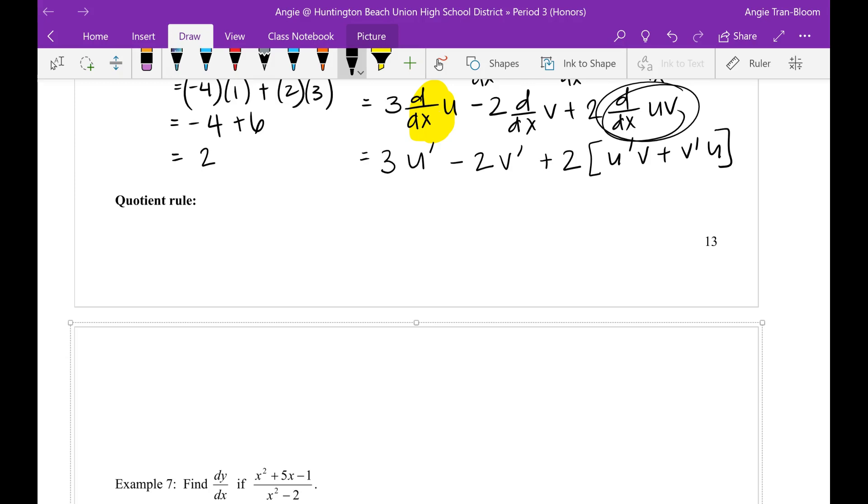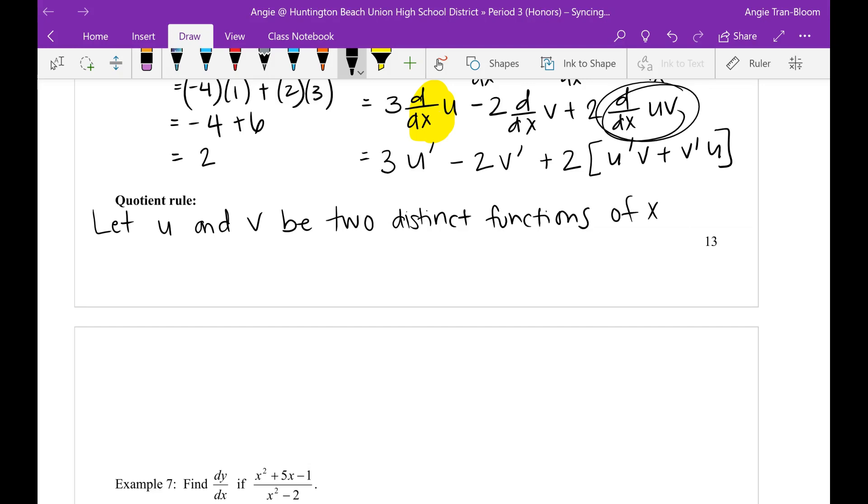So the quotient rule states that: Let u and v be two distinct functions of x. If you have the quotient u divided by v, two functions dividing one another, and you want to take the derivative with respect to x, then the rule says it's going to be u prime times v minus v prime times u all over v squared. This is, just like the product rule, you have to know this really well.